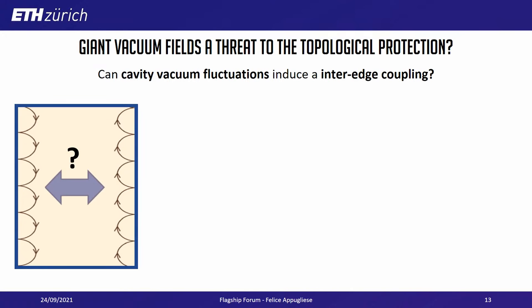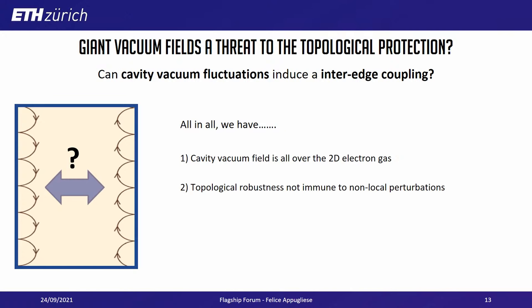The big question we asked ourselves is: can giant vacuum fields become a threat to this kind of topological protection? Can cavity vacuum fluctuations induce an inter-edge coupling — basically taking one electron sitting on an edge and somehow bringing it to the other edge? The reason why it makes sense to ask this question is that the cavity vacuum field is all over the 2D electron gas, and topological robustness is not immune to non-local perturbations. In order to answer this experimentally, we need to properly design our cavity to enhance the effect of vacuum fields.